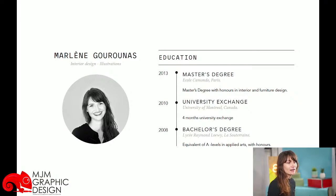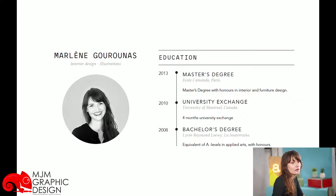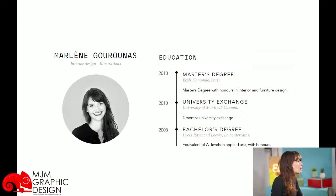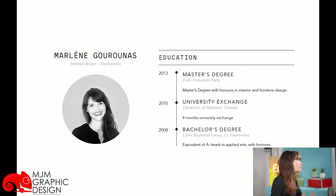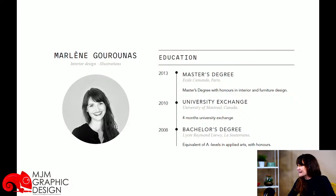J'ai intégré un lycée qui faisait option arts appliqués. Je le conseille à toutes les personnes qui, dès le collège, veulent devenir designer, parce que ça m'a fait gagner pas mal de temps pour intégrer une école de design. Normalement, pour intégrer une école de design, on doit faire une mise à niveau ou une à deux années de prépa. Grâce à ce bac arts appliqués, j'ai pu directement intégrer l'école Camondo, qui est une école sur cinq ans basée à Paris, proposant une formation d'architecture intérieure et design produit.